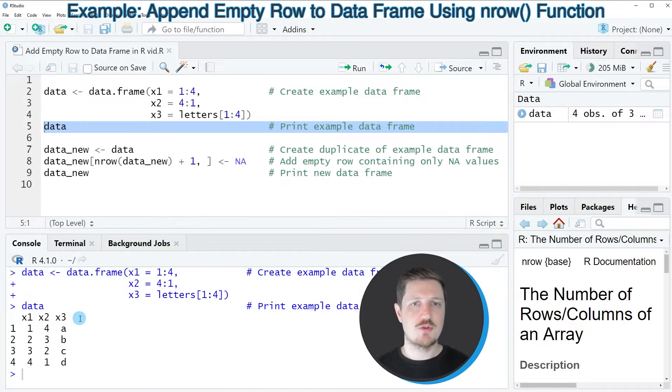Now let's assume that we want to add an empty row that contains only NA values at the bottom of this data frame.